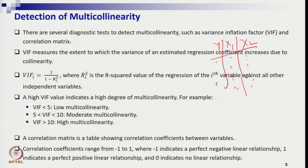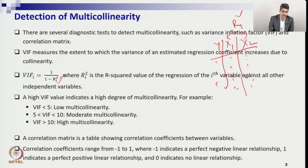R-squared here is the coefficient of determination for the particular variable. Suppose you find the correlation between x1 and x2 — you will find R-squared, say R1-squared upon x2. Similarly, if you have many independent variables, you can find the corresponding R-squared by taking the other independent variables together and measuring how much each variable is correlated with the others. That gives you the individual R-squared for each independent variable.